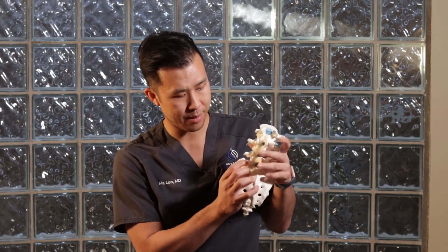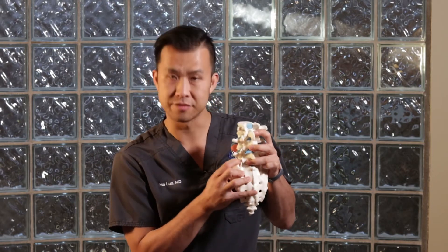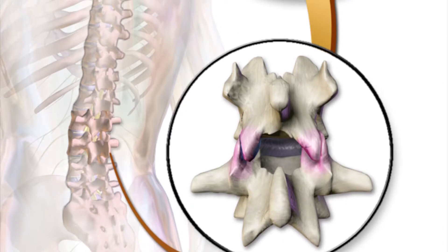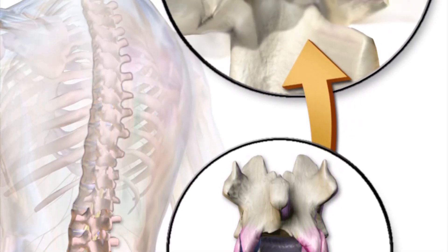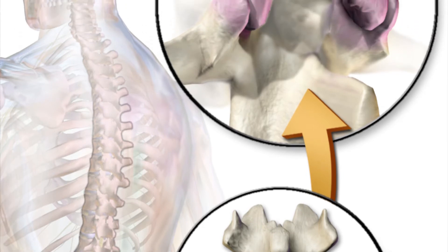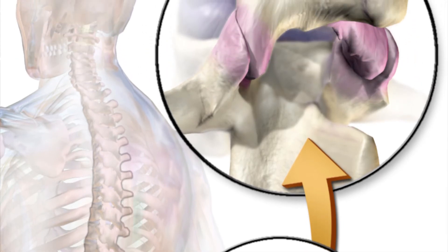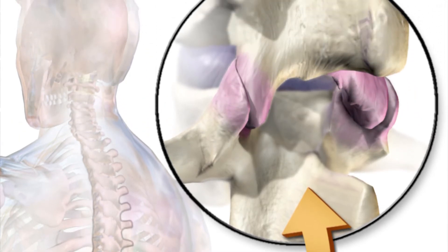The first two steps are medial branch blocks. This is a reversible block where we temporarily numb the little nerves that go to the joint to see if that's helpful. The medication we use is bupivacaine, which only lasts about 8 to 12 hours. We do one medial branch block, temporarily block it for about 10 to 12 hours, and then do a second medial branch block two weeks later.